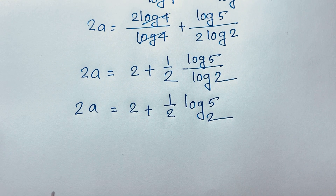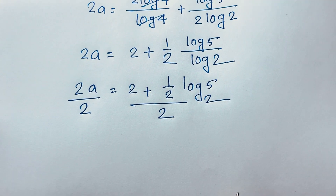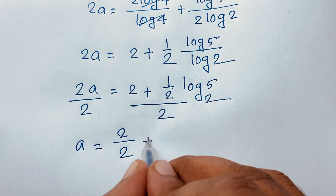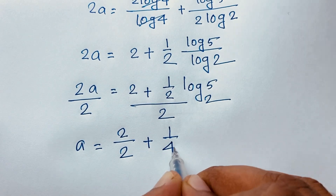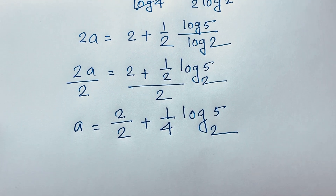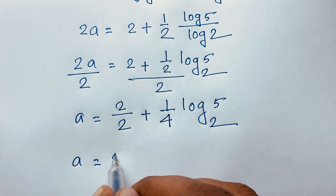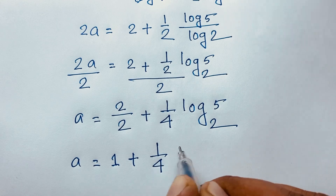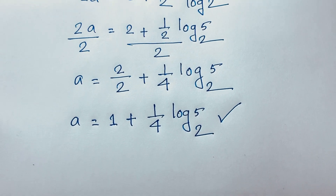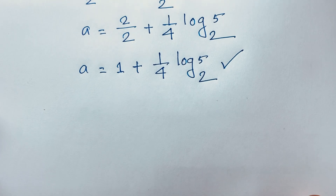Dividing both sides by 2, we separate the fraction: a equals 2 over 2 plus one quarter log base 2 of 5, which simplifies to a equals 1 plus one quarter log base 2 of 5. This is our final answer for this exponential math Olympiad question, solved step by step.